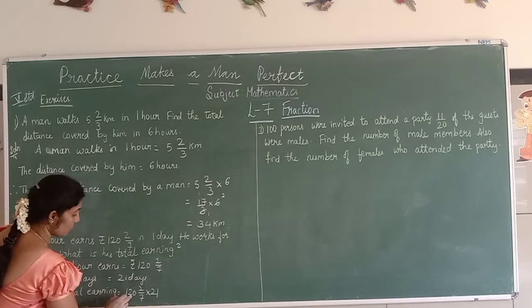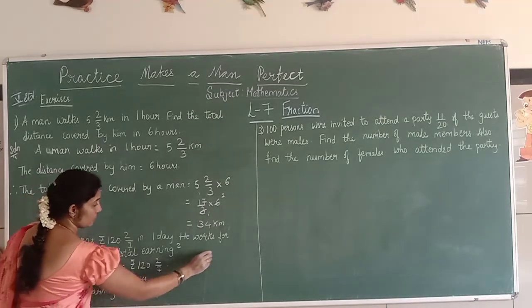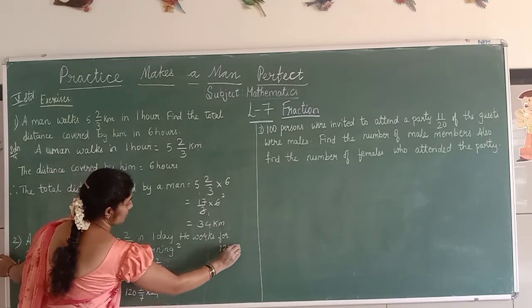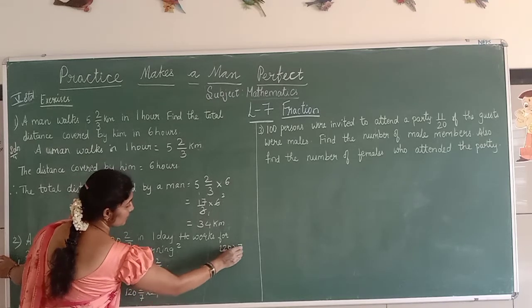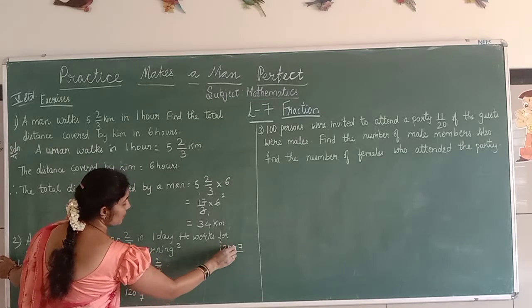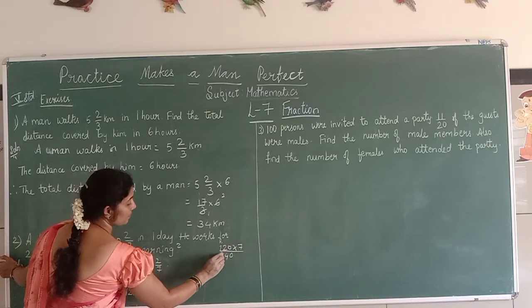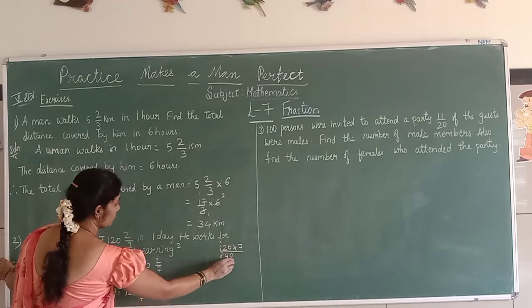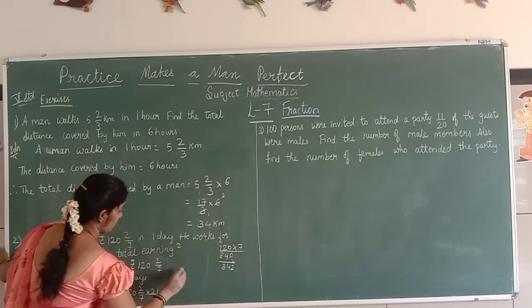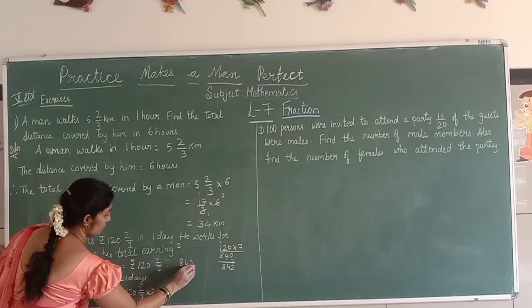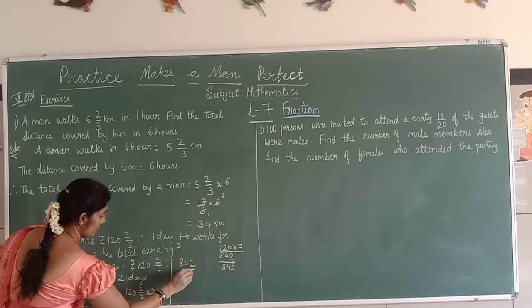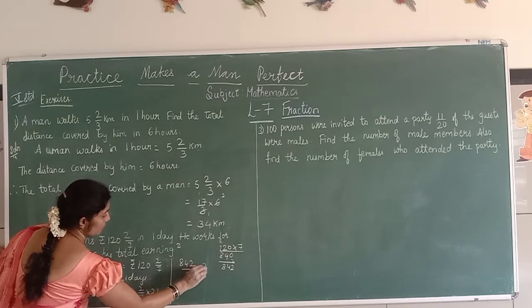Change the mixed fraction into improper fraction. 120 times 7 equals 840, plus 2 equals 842. So it is 842/7 into 21.